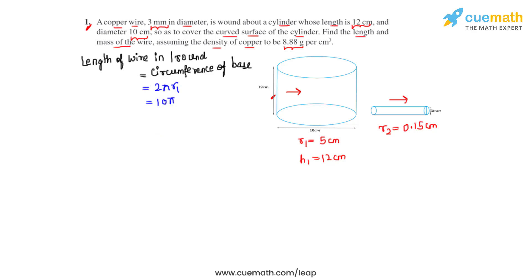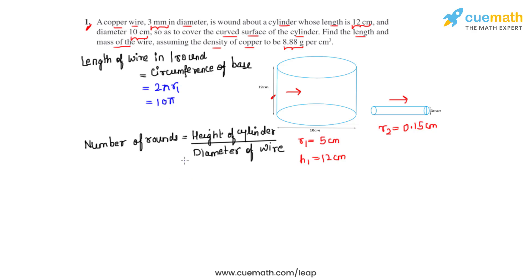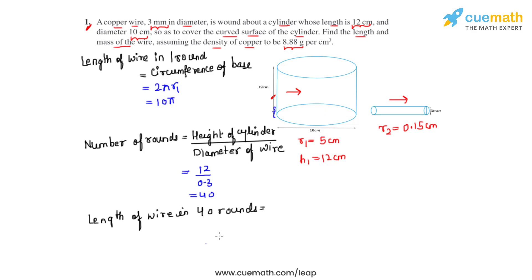We can now calculate the number of rounds required to cover the complete curved surface area of the cylinder. The total height is 12 centimeters and one round covers only 0.3 centimeters, so the total number of rounds will be 12 divided by 0.3, which gives us 40 rounds. The length of wire in 40 rounds will therefore be equal to 10π times 40.